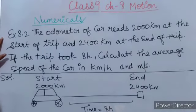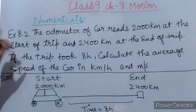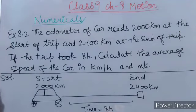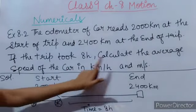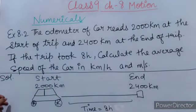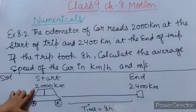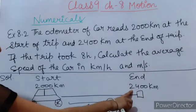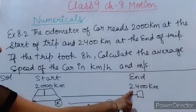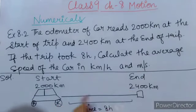Next is example 8.2 from NCERT. The odometer of a car reads 2000 km at the start of a trip and 2400 km at the end of the trip. If the trip took 8 hours, calculate the average speed of the car in km per hour and meter per second.